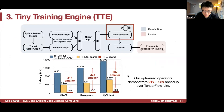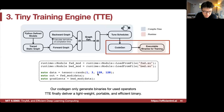With optimized individual operators — using loop tiling, register blocking, and other low-level optimizations — together these techniques demonstrate a 21-23x speedup over TensorFlow Lite on microcontrollers (ARM Cortex-M7). The output is a lightweight, portable, efficient binary fitting microcontrollers.